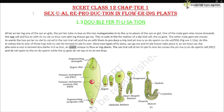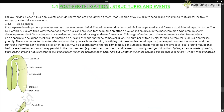Double fertilization is an event unique to flowering plants. The central cell, after triple fusion, becomes the primary endosperm cell (PEC) and develops into the endosperm, while the zygote develops into an embryo. These are collectively referred to as post-fertilization structures and events.